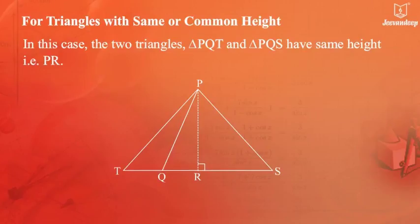For triangles with same or common height. In this case, the two triangles, triangle PQT and triangle PQS have same height, i.e. PR.